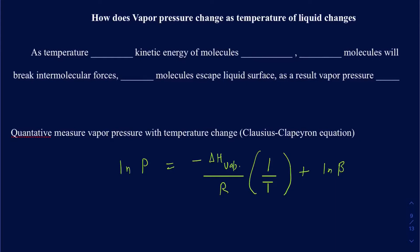Whenever the temperature increases, the kinetic energy of the molecules is also going to increase. When the kinetic energy is increasing, it means they are moving faster. In that particular case, more molecules will have enough energy to break those intermolecular forces. If those intermolecular forces can be broken in the liquid phase, the molecule could escape — more molecules will escape from the liquid surface onto the vapor phase. As a result, your vapor pressure is going to increase.